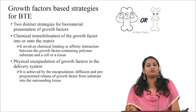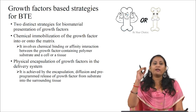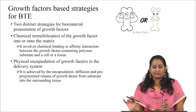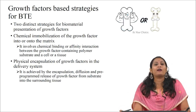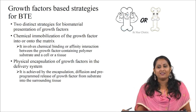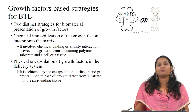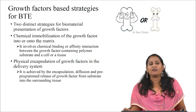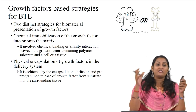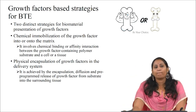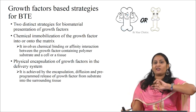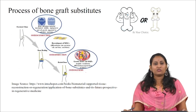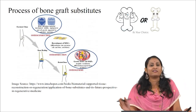The second strategy is physical encapsulation of growth factors in the delivery system, achieved by encapsulation, diffusion, and programmed release of the growth factor from the substrate into the surrounding tissue. A good example we saw in the last session involved delivery through external stimuli — specifically, ultrasound — to physically release growth factors from the scaffold. These are the two main strategies for growth factor delivery.